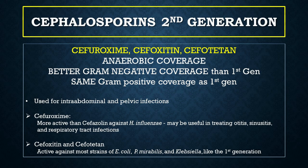Moving on to the second generation cephalosporins. The most commonly used antibiotics here are cefuroxime, cefoxitin, and cefotetan. They mostly have anaerobic coverage, they have better gram-negative coverage than first generation, and they have absolutely the same gram-positive coverage as first generation. They are most commonly used to treat intra-abdominal and pelvic infections. Cefuroxime especially is more active than cefazolin against H. influenzae and may be useful in treating otitis, sinusitis, and respiratory tract infections. Cefoxitin and cefotetan are active against E. coli, Proteus mirabilis, and Klebsiella.